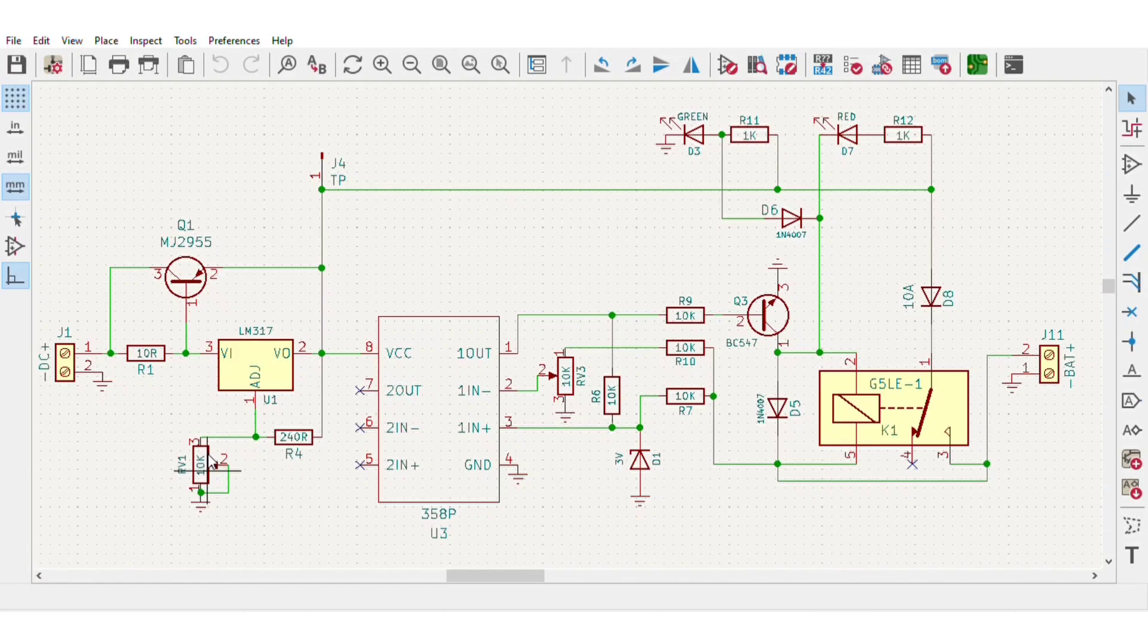Since the LM317 can supply only 1.5 ampere output current, I used this PNP power transistor to bypass the current up to 10 amperes from input to battery while voltage is still controlled by LM317.